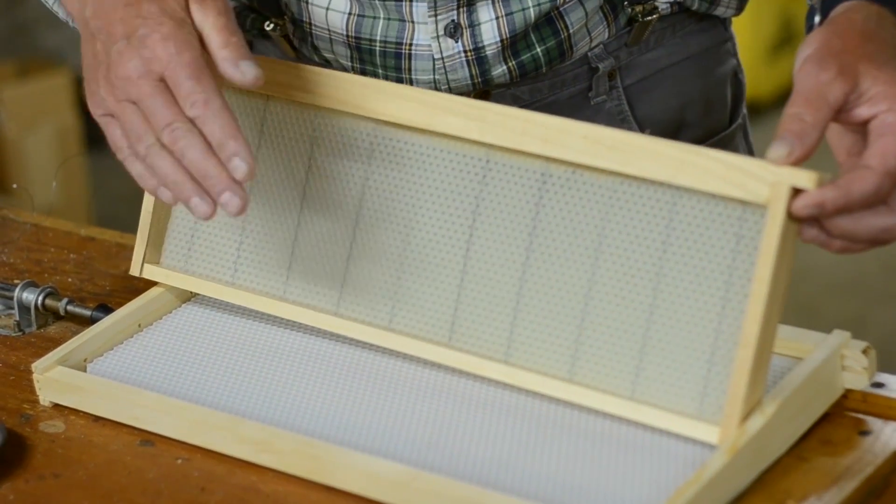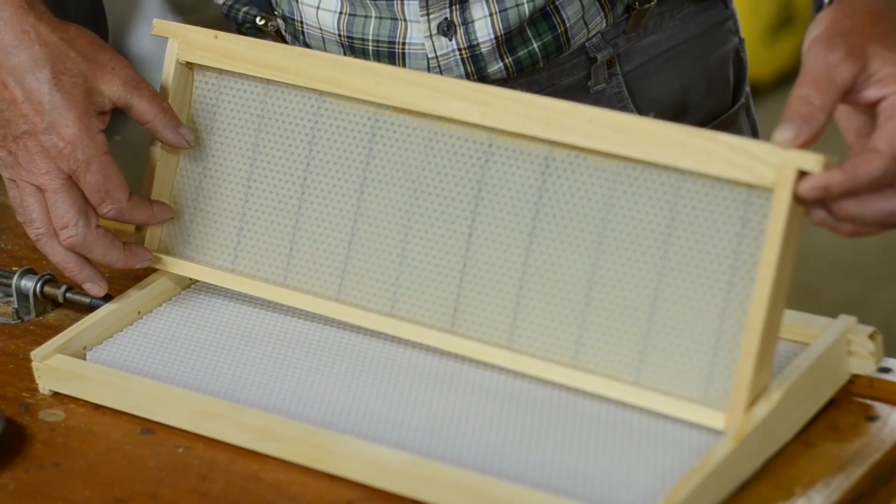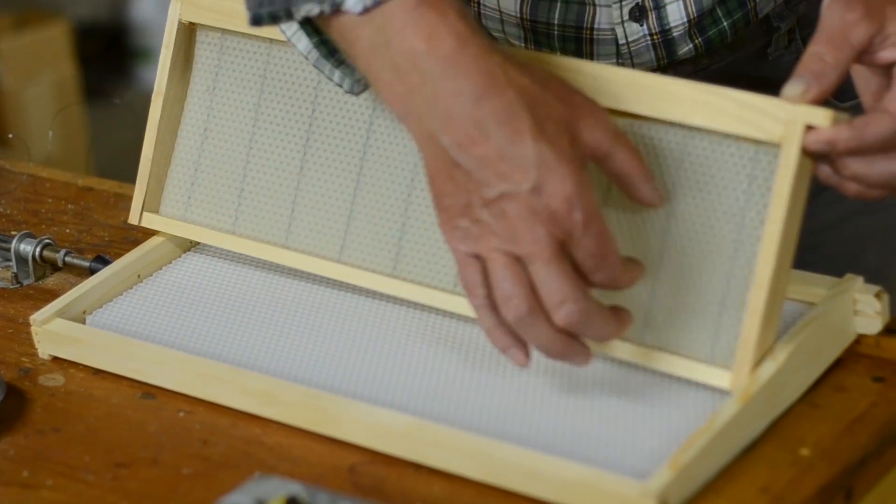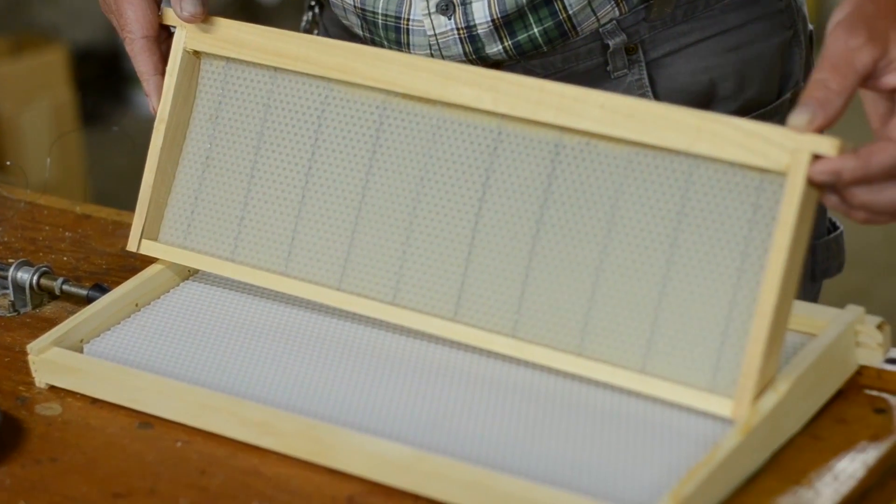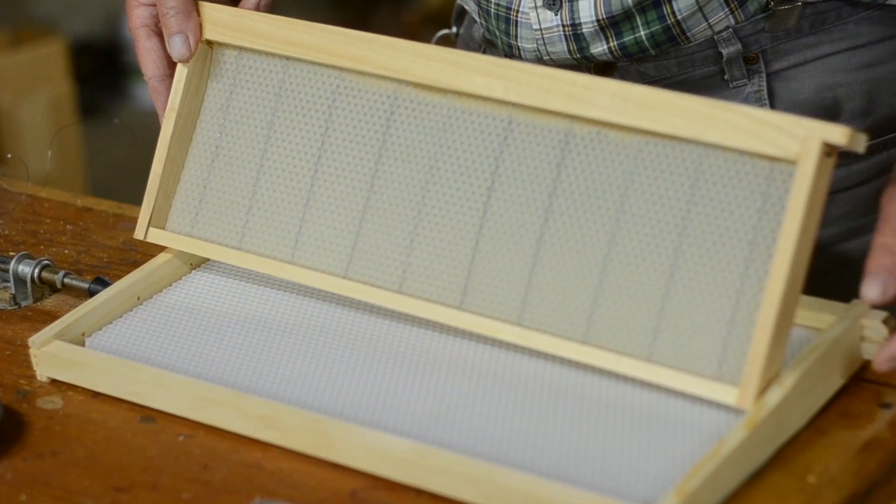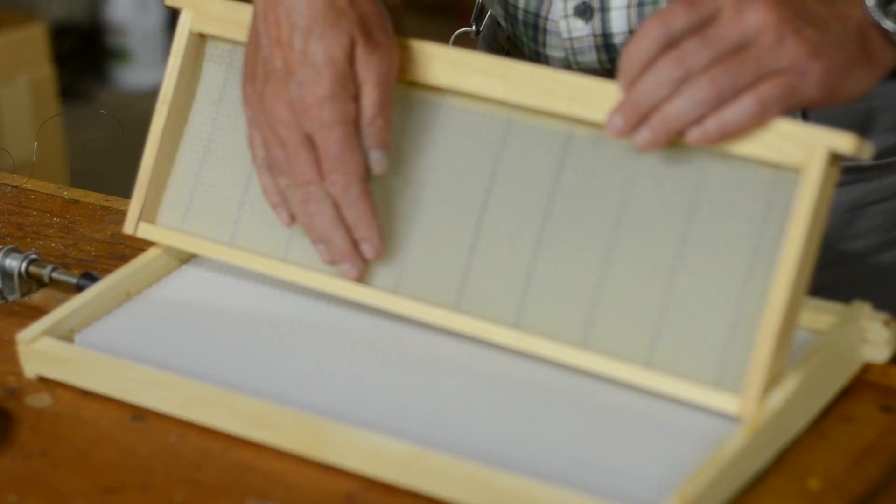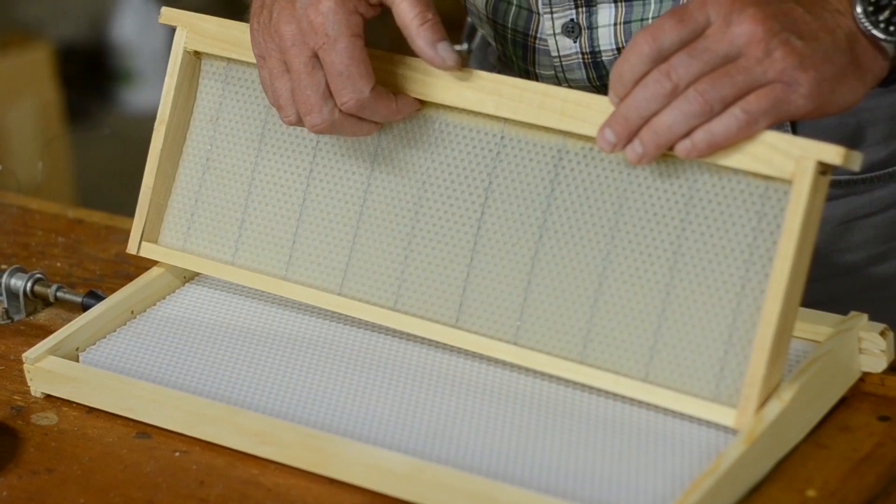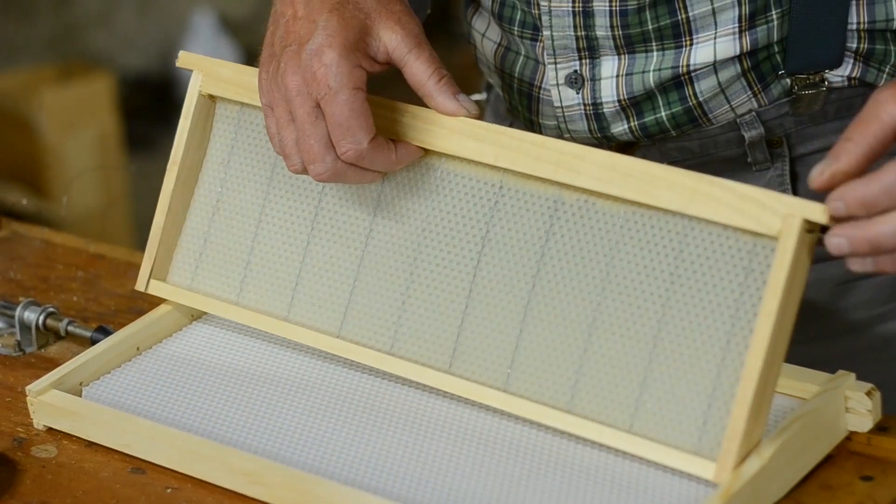Beeswax foundation can move around and on a deeper frame it's necessary to put in cross wires which we'll show you in a moment. But with these medium depth frames it's just a matter of putting the foundation in the groove in the bottom and in the groove in the top just like we did with the plastic.